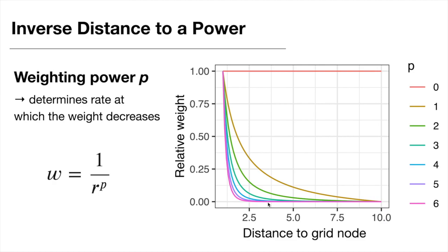If we set the weighting power to a really high value, only the points closest to our grid node will have a great influence on the assigned value. The default p value is two — the green line in the figure. Now you know you can change that so that points further away have either a greater or lower influence. Let's go to Python to see how to change the weighting power and perform interpolation using GDAL and the inverse distance to a power algorithm.